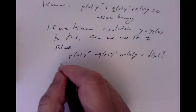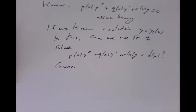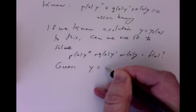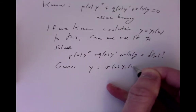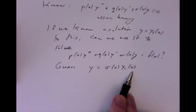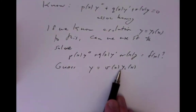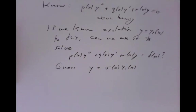The guess we take — probably the easiest way to remember this method — is that the solution to the inhomogeneous problem could be some unknown function v(x) times the given solution y1 to the homogeneous. So you take this homogeneous solution and multiply it by some function v, trying to find an equation for v that will make it pop out the right inhomogeneity.